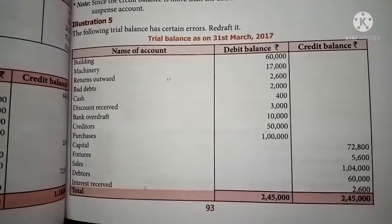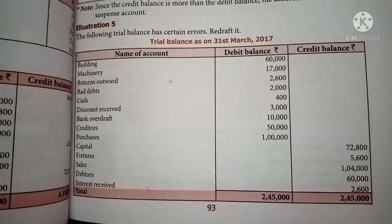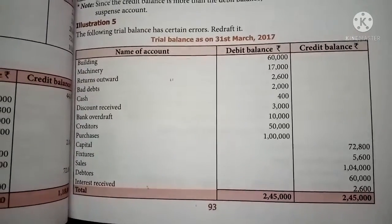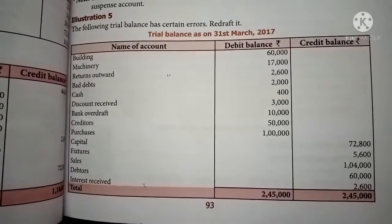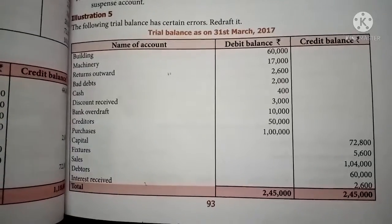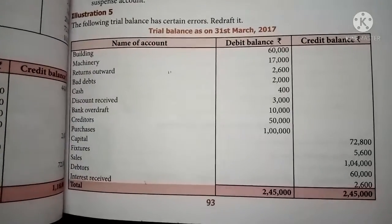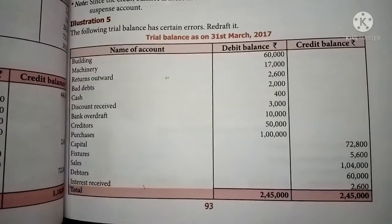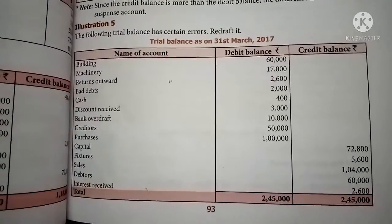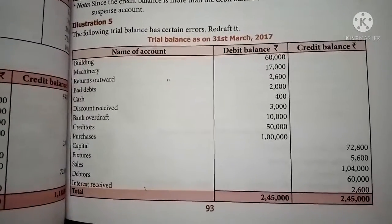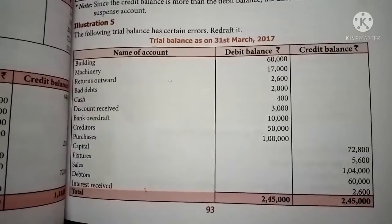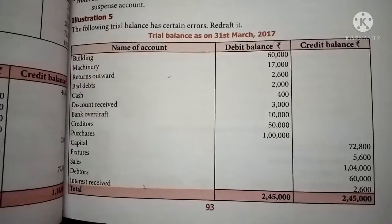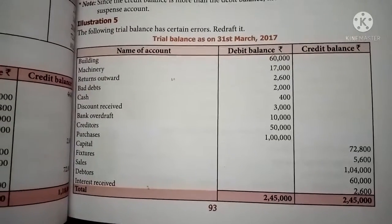So to summarize the corrections from the given sum: return outwards (purchase returns) — moved to credit column; discount received, 3,000 — moved to credit column; bank overdraft, 10,000 — moved to credit column; creditors, 50,000 — moved to credit column. And fixtures, 5,600 — moved to debit column; debtors, 60,000 — moved to debit column. So these are all the items that will be changed while redrafting.